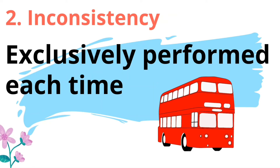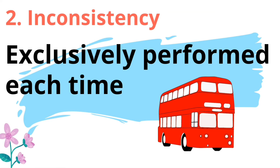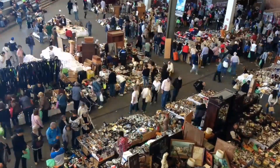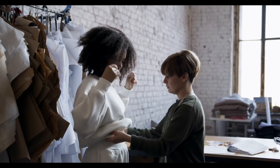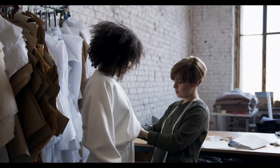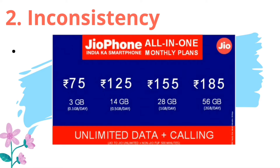The second important characteristic of service is Inconsistency. Since services are not standard tangible products, they have to be performed exclusively each time. In the market, different customers have different demands and expectations. So service providers should have opportunities to change their services to fully satisfy customers' needs. We can see this in mobile services — many monthly plans are offered to customers, and they purchase them as per their different requirements.